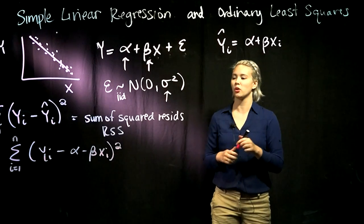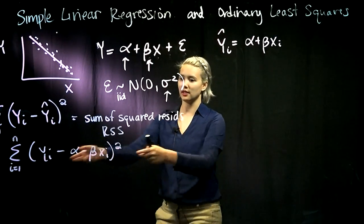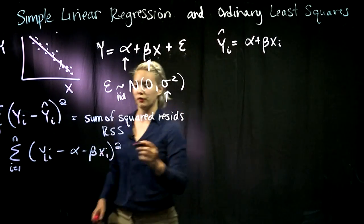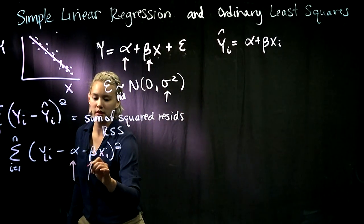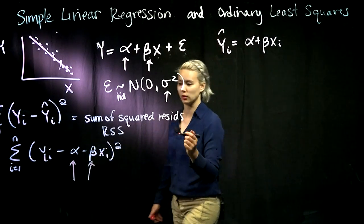What we're doing in this ordinary least squares setting is taking this sum of squared residuals and then finding the alpha and beta that minimize this sum of squared residuals.